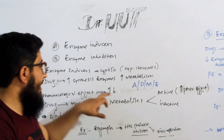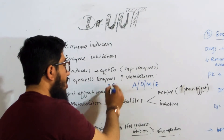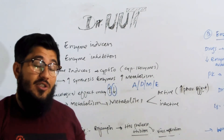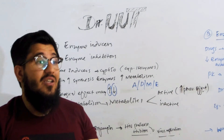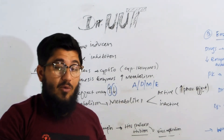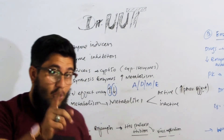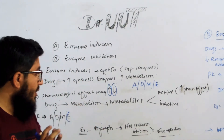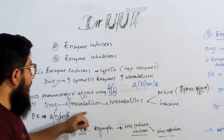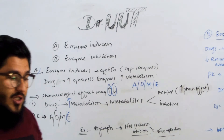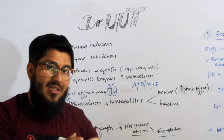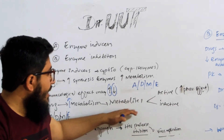Enzyme inducers have two functions: they may increase or may decrease the pharmacological effect of a drug. Enzyme inducer drugs will increase the metabolism of drugs. After metabolism, metabolites are formed, and those metabolites are of two types — active or inactive.